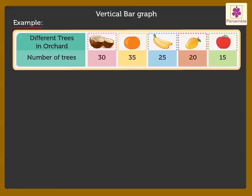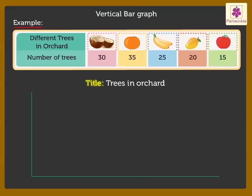Step 1: Write a title explaining what is being represented. Step 2: Draw the horizontal and the vertical axis.